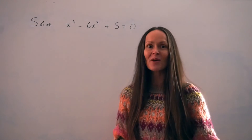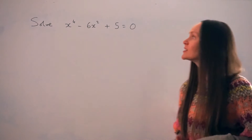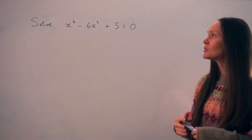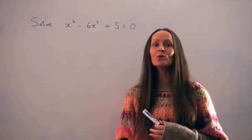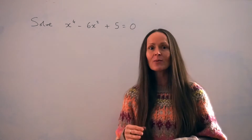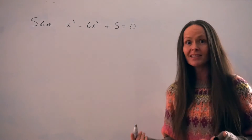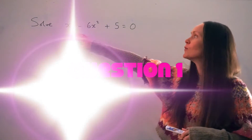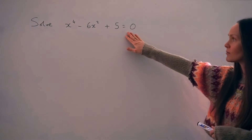In this lesson I'm going to show you how to solve more complicated looking equations, for example equations like this one. I'm going to show you how you can make substitutions in order to write the equations in a simpler looking way so that they're easier to solve. In the first question we have to solve x to the power of 4 minus 6x squared plus 5 equals 0.